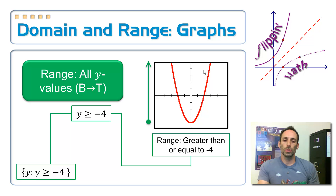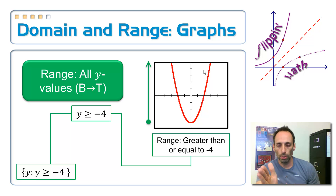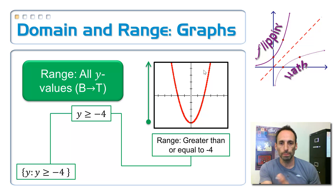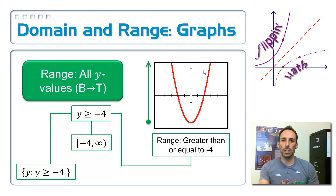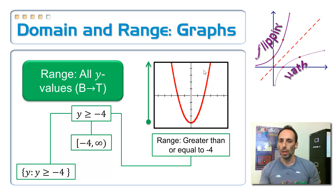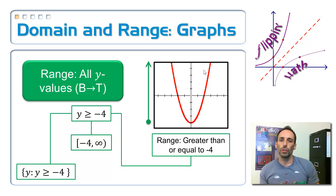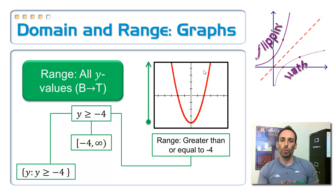Or maybe I want to use interval notation. Smallest to biggest — what's the smallest number? Negative 4. Is it included? Yes, so it gets a bracket, all the way up to positive infinity. So domain and range with a graph is pretty easy because you're just doing a visual inspection, sweeping from left to right for the domain and down to up for the range.